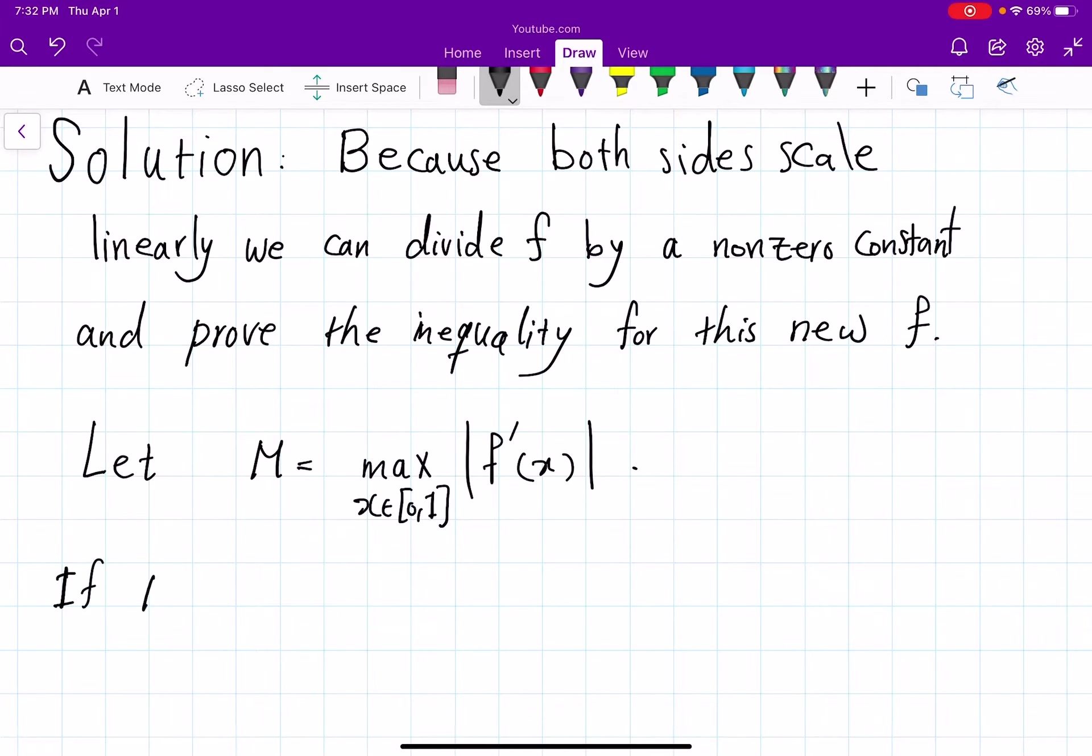But this may end up actually to be 0, which is actually an easy case. So if M equals 0, then we can prove the inequality directly and very easily. Because you have 0 at the beginning. Actually, this forces f also to be 0 and you're done.